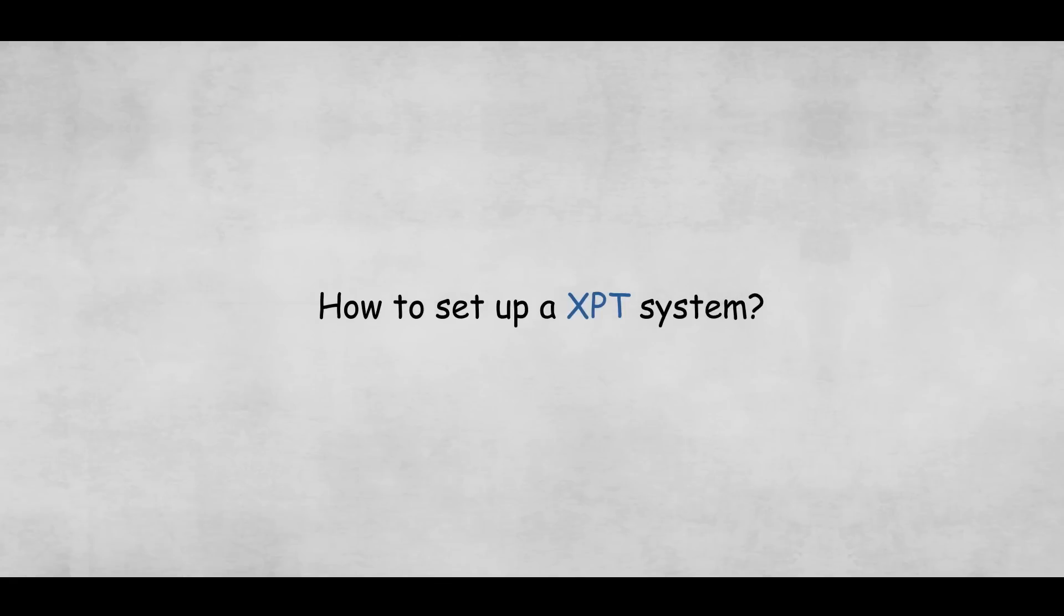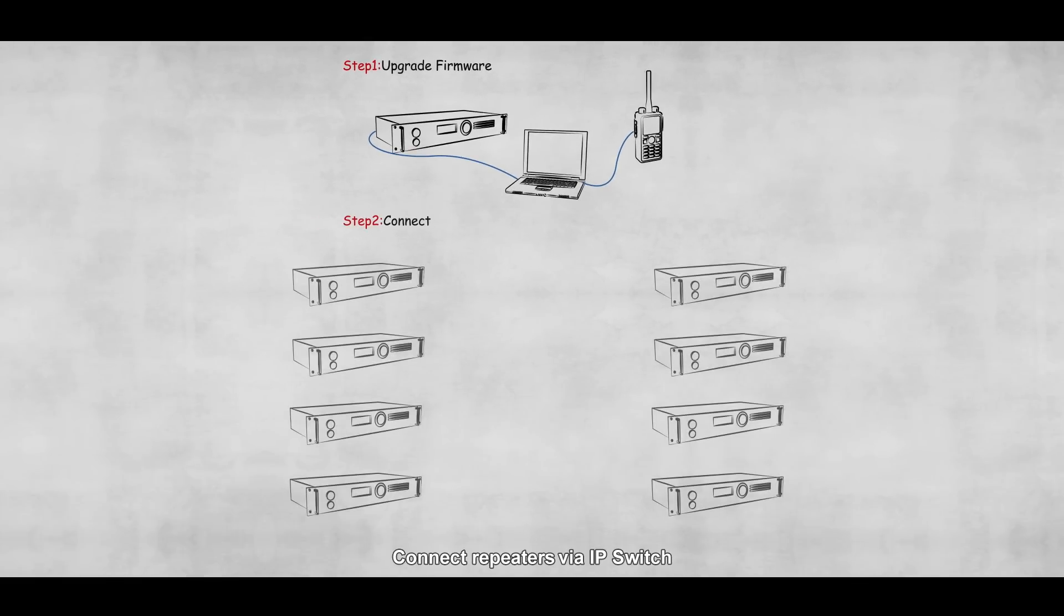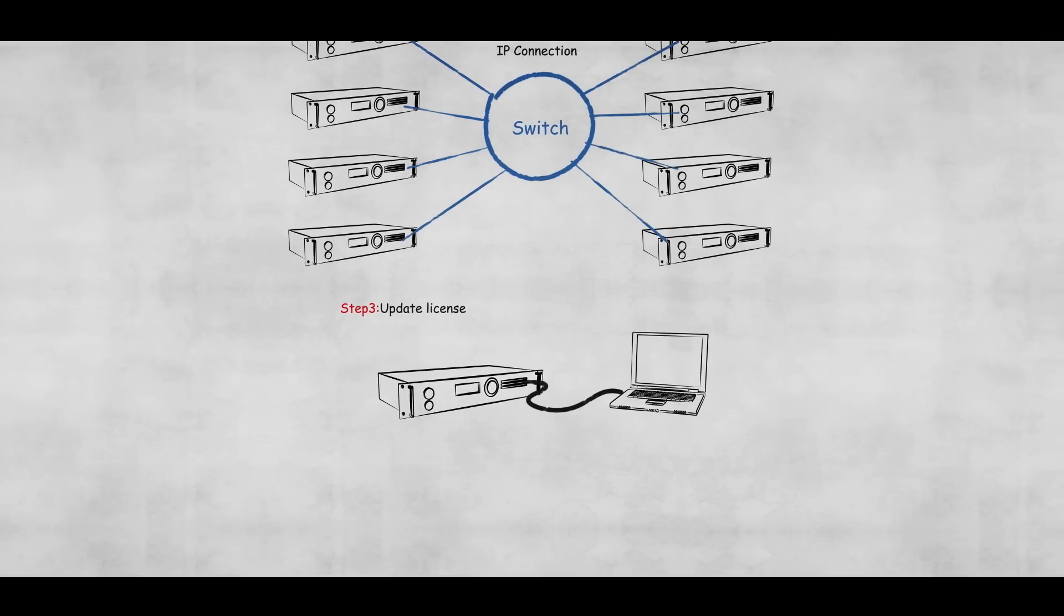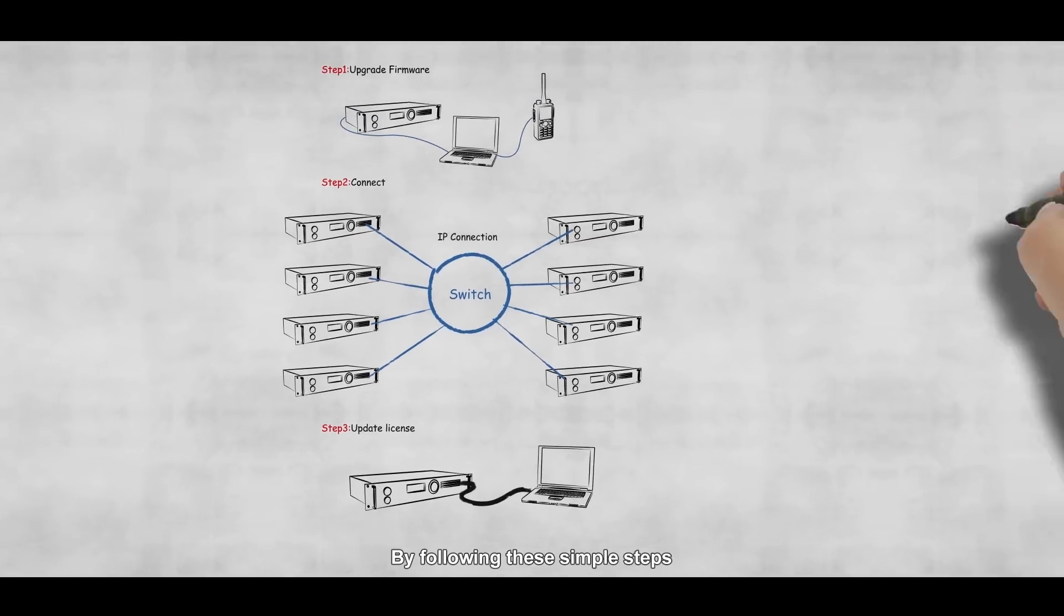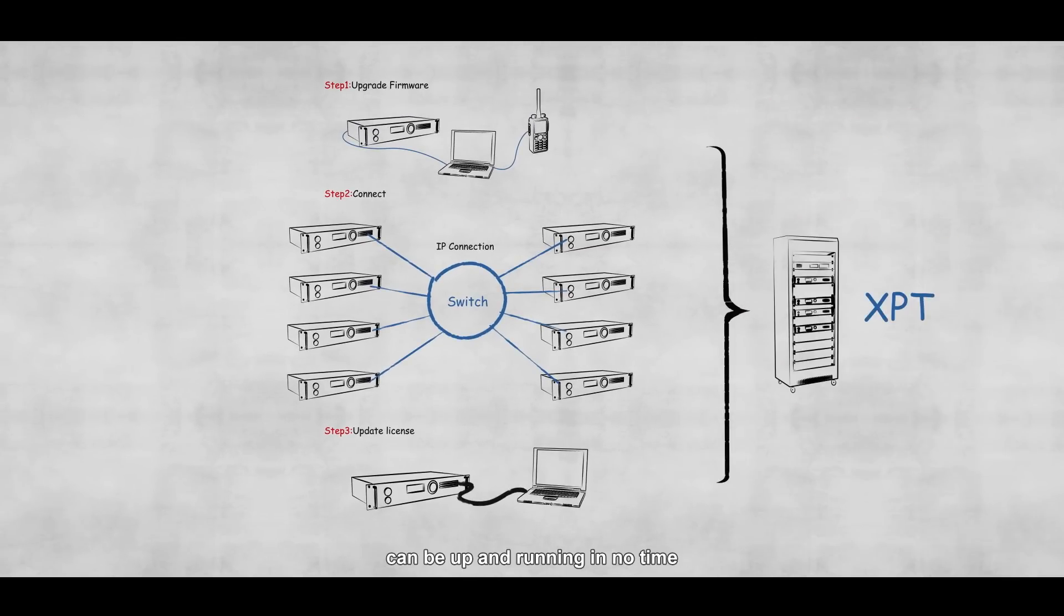How to set up a XPT system? First, upgrade firmware to RD-98XS repeaters and DMR subscribers. Second, connect repeaters via IP switch. Third, update license for repeaters and configure all devices. By following these simple steps, the Hytera XPT digital trunking system can be up and running in no time.